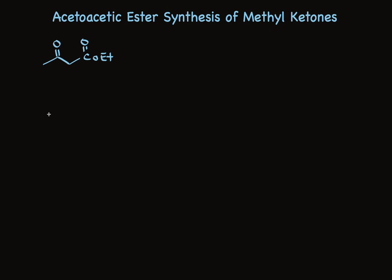The starting material is a compound called ethyl acetoacetate. It's an ester, so we put ethyl way out in front. Acetoacetic ester is another common name. And it's this second name that's used to describe the synthesis of methyl ketones, the acetoacetic ester synthesis.